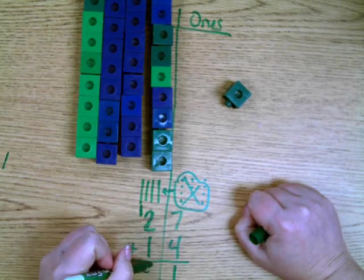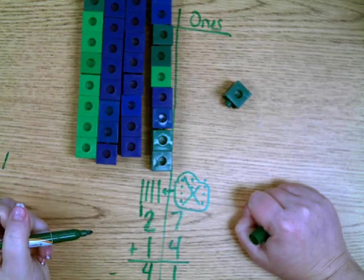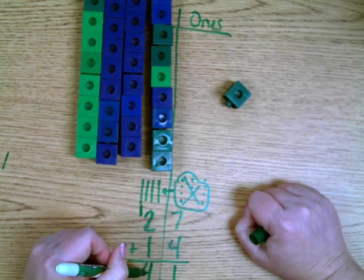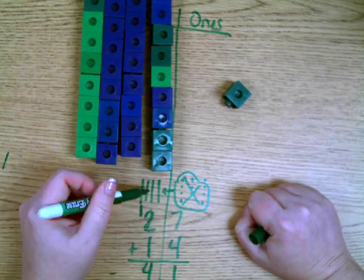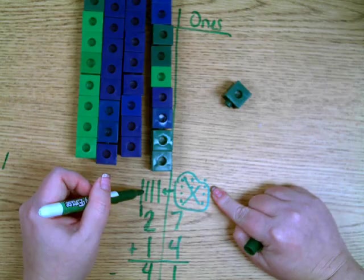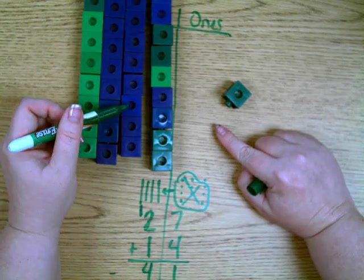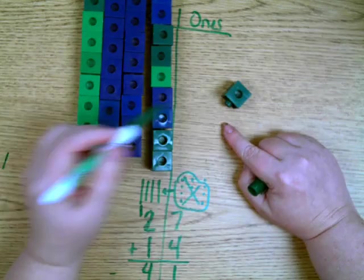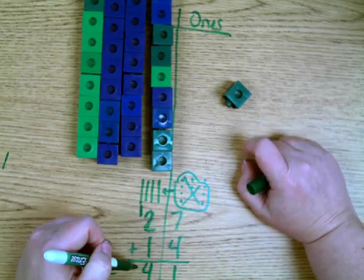And my abstract. I see my abstract representation of 41, which connects to my representational understanding of 41, which connects to the concrete understanding of 41. So they all relate to one another.